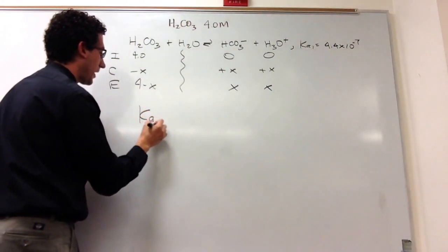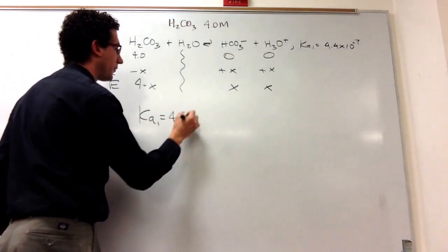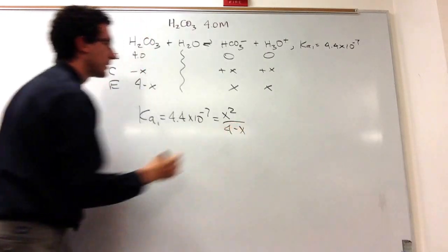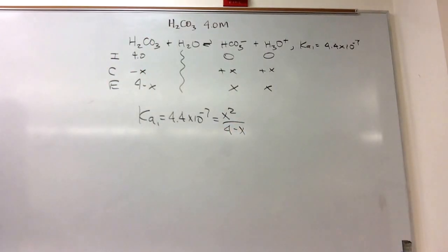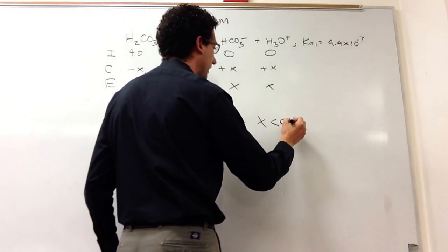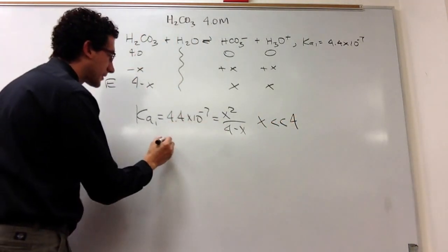So you go Ka1, which is 4.4 times 10 to the minus 7 equals X squared over 4 minus X. And then what you're going to say is X is small.